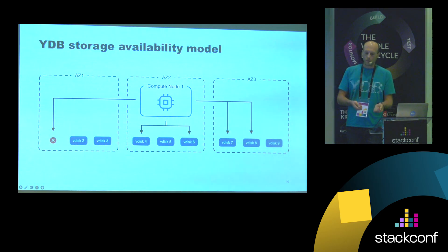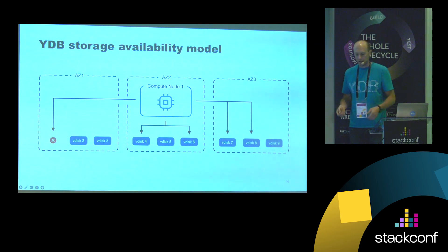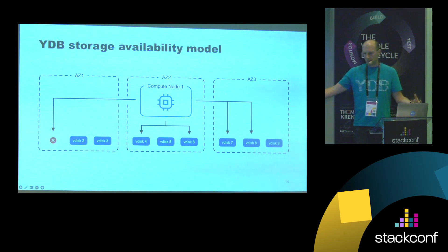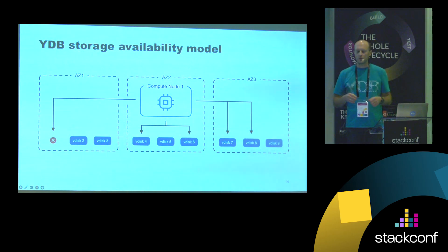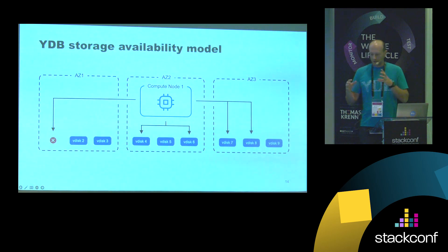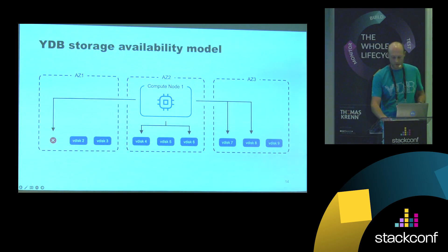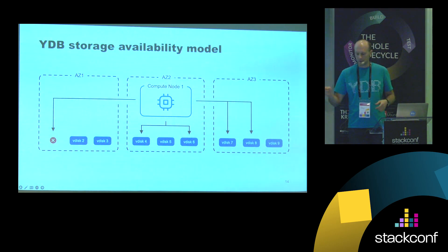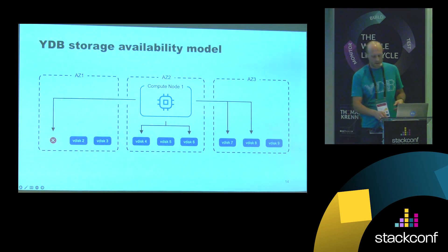When you need to read a blob, you send a request to distributed storage and read the blob by its identifier. The distributed storage group sends a request to all the virtual disks that keep a copy of the blob, and the fastest response is considered to be enough — so you can save on cross data center latency.